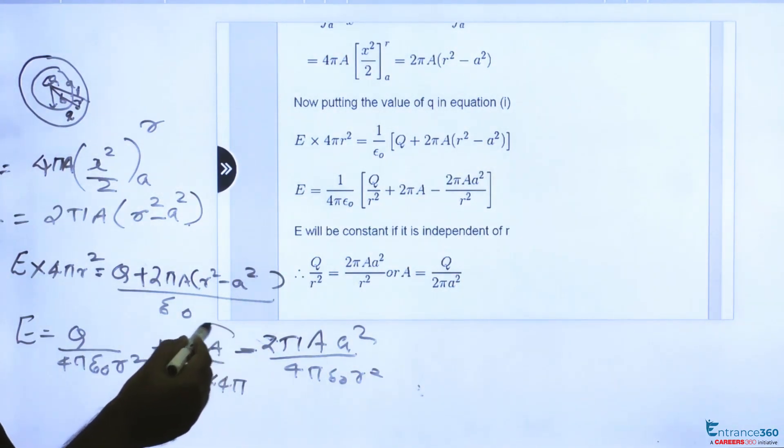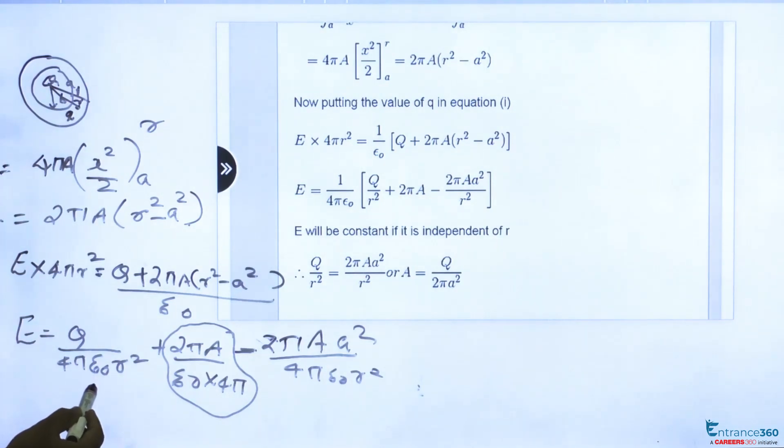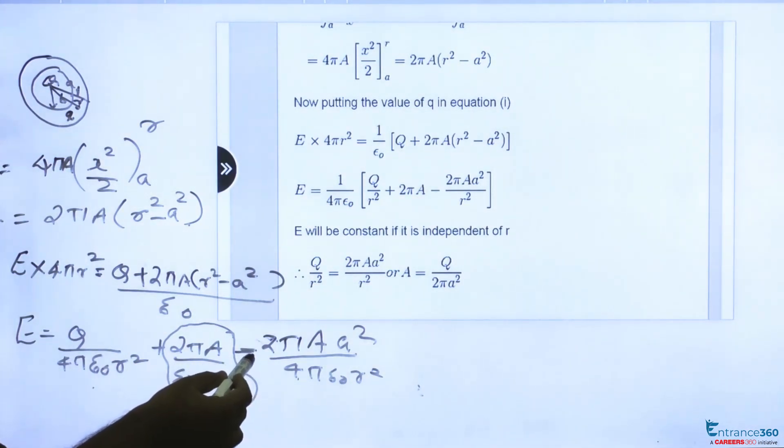So this is a constant term which is not depending upon the distance R or radius R. So for this to be constant, these two terms should be equal, or q by 4 pi epsilon 0 R square minus 2 pi A into A square by 4 pi epsilon 0 R square should be equal.